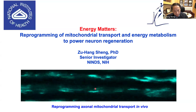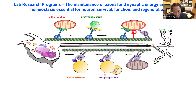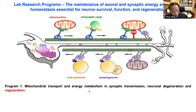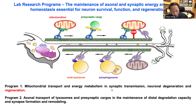Before presenting our data, I'd like to give a brief introduction of our research program. We are focused on the regulation of axonal transport of mitochondria, lysosomes, and pre-synaptic cargoes. Regulation of this organelle transport is critical for the maintenance of axon and synaptic homeostasis, which is essential for neuron survival, function, and regeneration. Specifically, our lab works on two main programs: mitochondrial transport and energy metabolism in synaptic transmission, neuronal degeneration and regeneration; and axon transport of lysosomes and pre-synaptic cargo in maintenance of distal degradation capacity and synapse formation and remodeling.